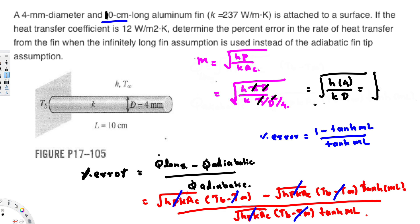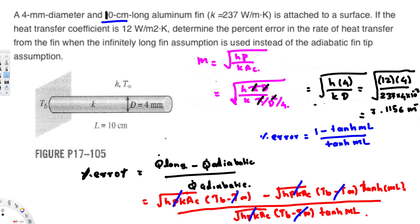Now let's plug in the values. H = 12 W/m²K, K = 237 W/mK for aluminium, and D = 4 mm = 4 × 10⁻³ m. So m = √(4 × 12 / (237 × 4 × 10⁻³)), which gives m = 7.1156 m⁻¹.